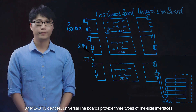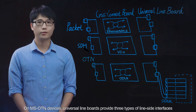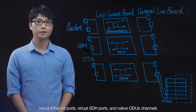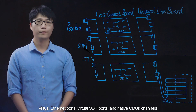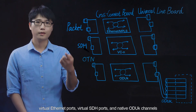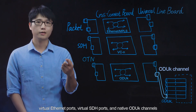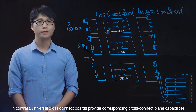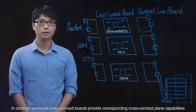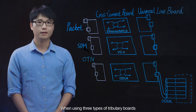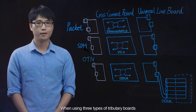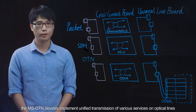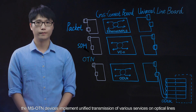On MSOTN devices, universal line boards provide three types of line-side interfaces: virtual Ethernet ports, virtual SDH boards, and native ODUk channels. In contrast, universal cross-connect boards provide corresponding cross-connect plane capabilities. When using three types of tributary boards, MSOTN devices implement unified transmission of various services on optical lines.